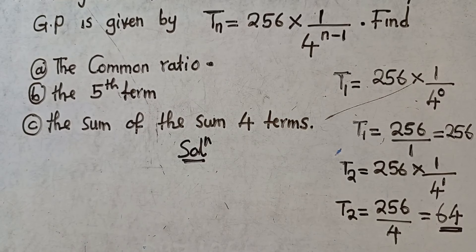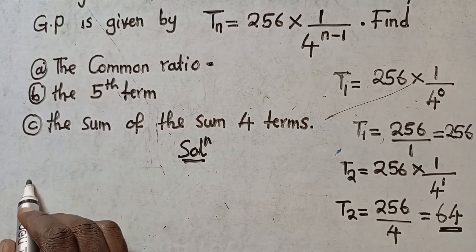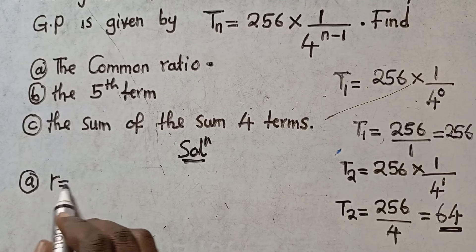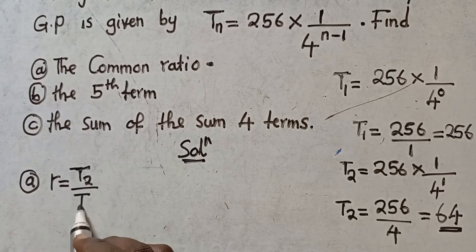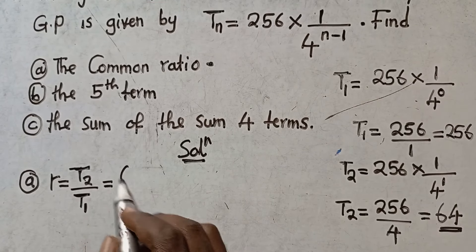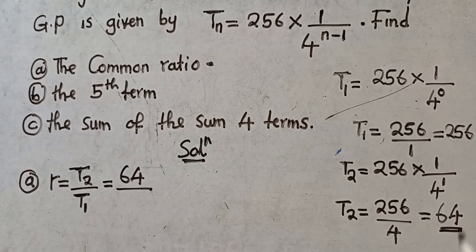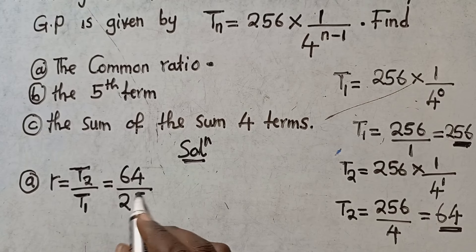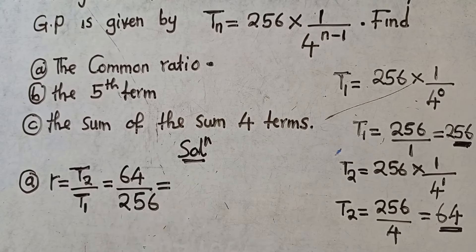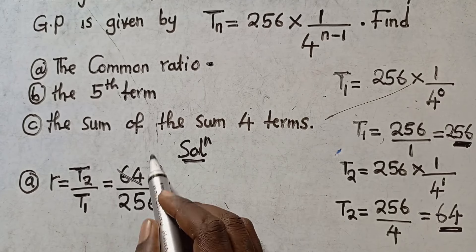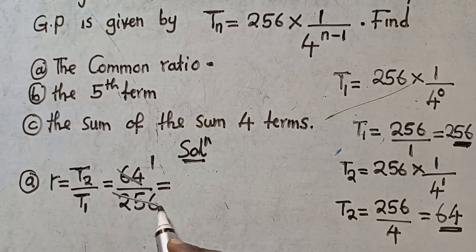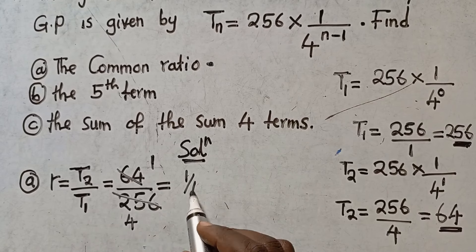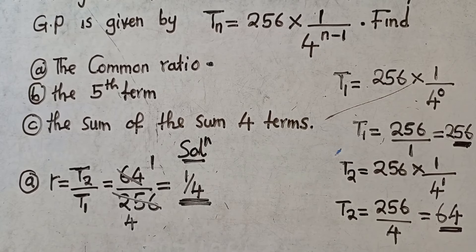Now to find the common ratio, which is the first part of our question, the common ratio equals the second term divided by the first term. My second term is 64 and my first term is 256. So I say 64 over 256. Dividing: 64 into 64 is 1, and 64 into 256 is 4, so the answer is 1 over 4. The common ratio is one over four.